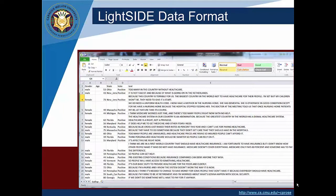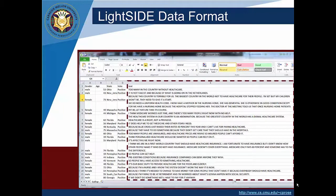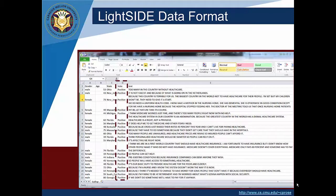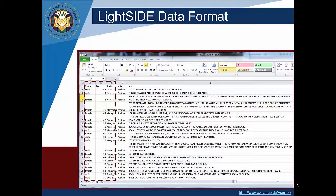Each row in this data set is one instance. You can see in the rightmost column the text — there's just one text column, labeled 'text'. Next to that, we have the class value, where we have two categories that each text might be classified into: positive or negative, depending upon somebody's attitude towards the bill. Then we have some demographic information about the person who submitted — in particular, their gender, their age, and their state. These can be additional variables or features used in prediction, combining text features with demographic features to make a prediction about the vote.